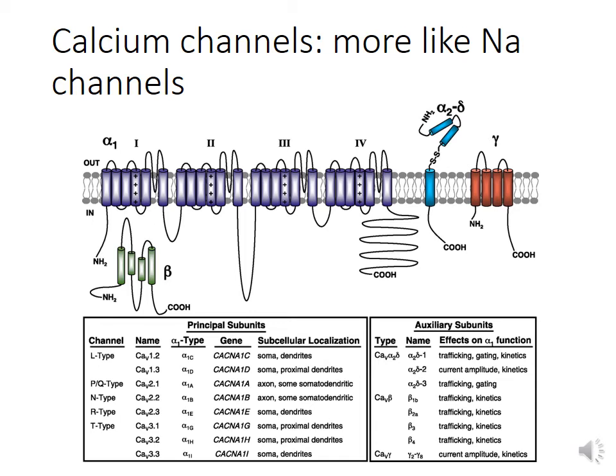What about calcium channels? Calcium channels are more like sodium channels. They have a major alpha polypeptide subunit that forms the pore of these channels, each with 4 repeats, and like sodium channels, these alpha subunits associate with accessory or auxiliary subunits that in this case are called beta, alpha 2 delta, and gamma.